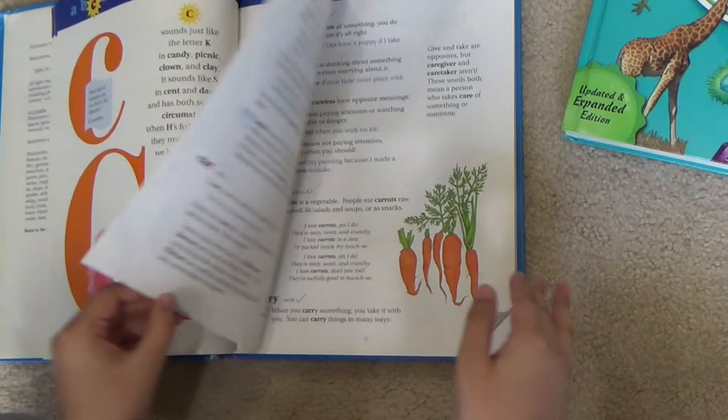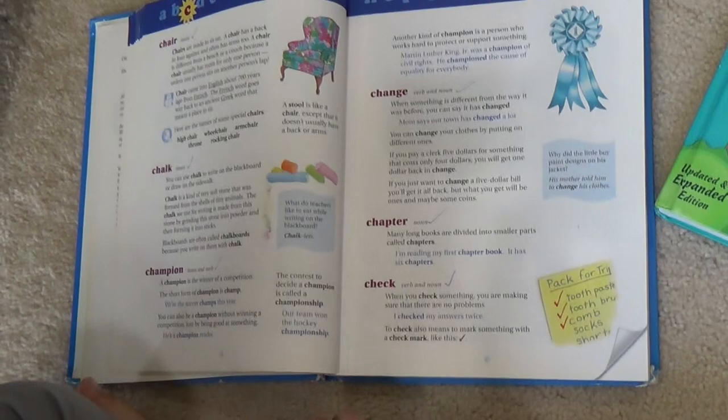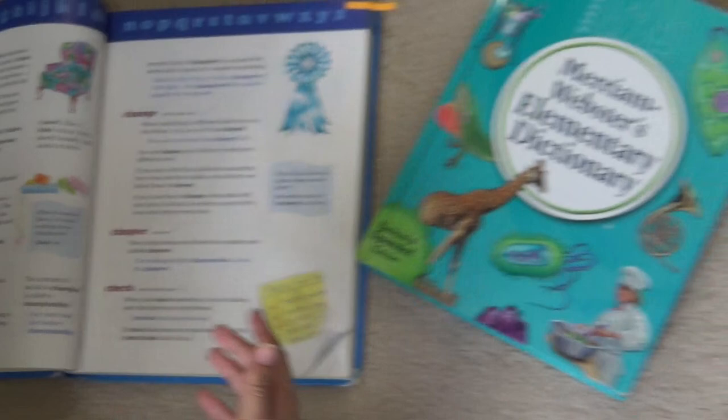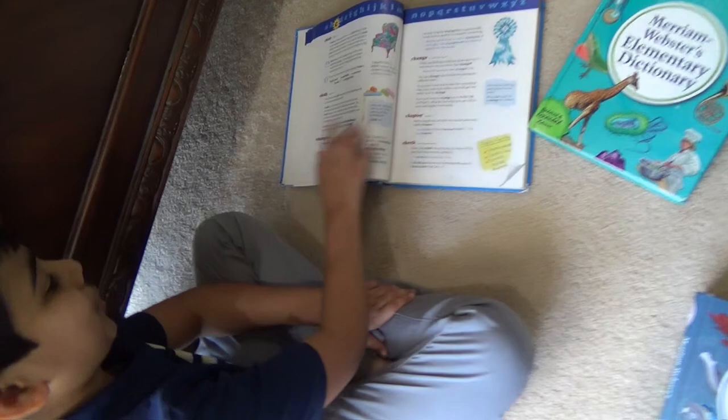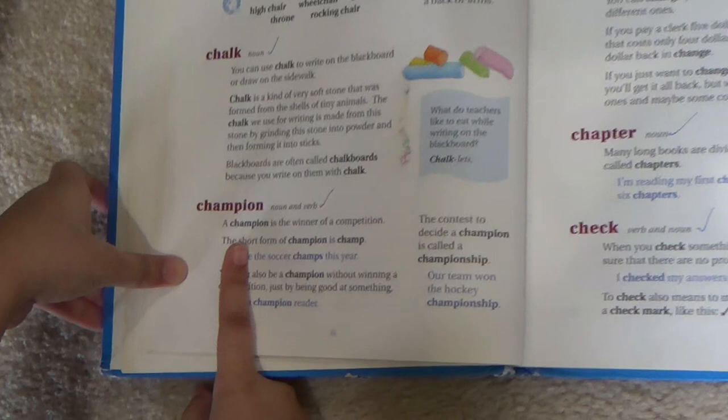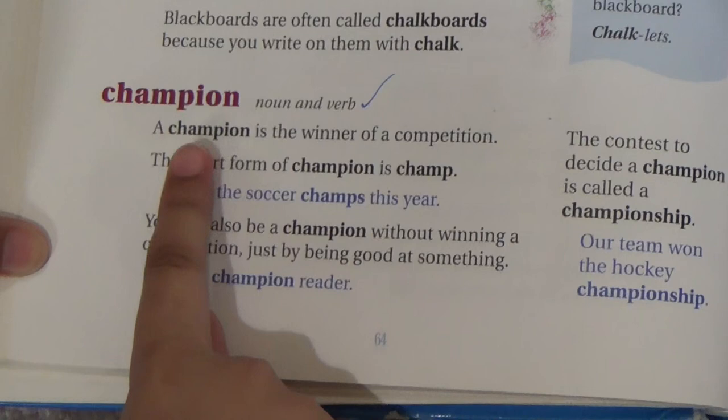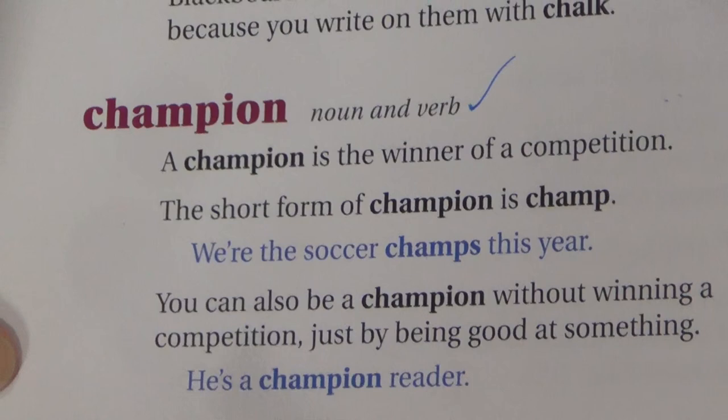I will be using one word to compare between all of these other dictionaries — and that word is champion, of course, because everybody wants to be a champion one day in spelling. The word champion is a noun and a verb. As you can see, it has very short and simple definitions. A champion is the winner of a competition, and the short form of champion is champ.